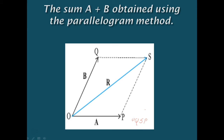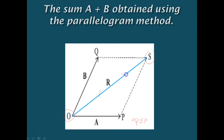Now, to find the summation, we join the point of intersection of these two lines — that is, we join point s and point o. That line is given by the resultant vector r. The resultant vector r is directed from the common origin o along the diagonal, from the origin o to the point s of this parallelogram.